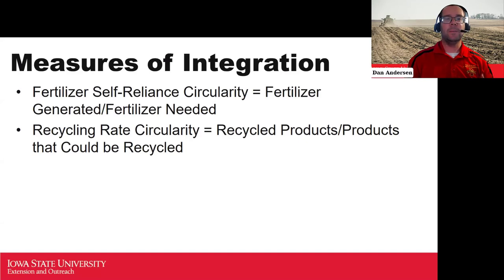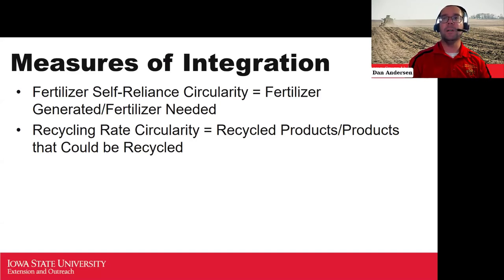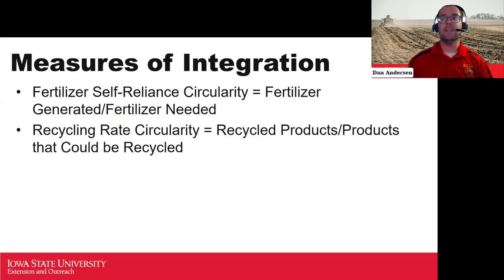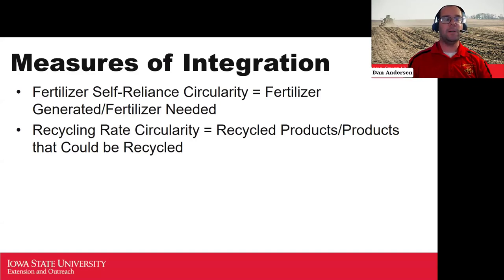I wanted to pivot to measures of integration. A couple I found in manuscripts were fertilizer self-sufficiency or self-reliance circularity — of all the fertilizer I need on my farm, what percent am I supplying with manures? Or we can think about recycling rate circularity — I have all this manure excreted from an animal, how good am I at getting that cycle back in useful ways?